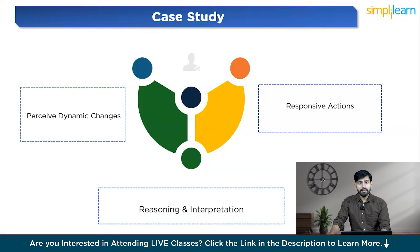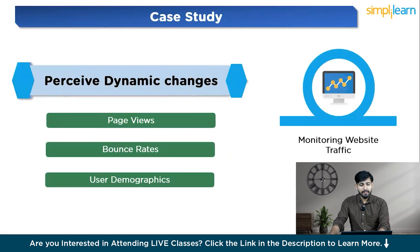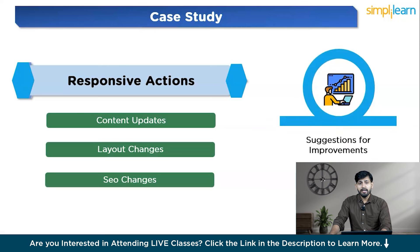User demographics provide information about visitors — such as age, gender, and location — helping tailor content and marketing strategies. In this case study, the parameters being examined are: perceiving dynamic changes, responsive actions, and reasoning and interpretation. Moving to responsive actions, the AI agent identifies pages that are not performing well based on traffic patterns and provides actionable suggestions such as content updates, layout changes, and SEO improvements to enhance user engagement. Content updates refresh outdated information; layout changes adjust design for better user experience; and SEO improvements increase page visibility to attract more visitors.